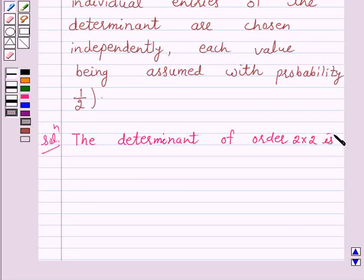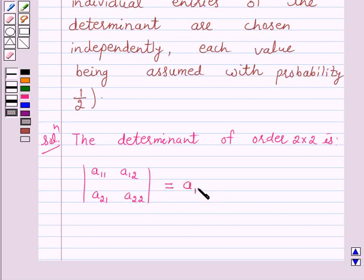is a11, a12, a21, a22. And this is equal to a11 into a22, minus a21 into a12.